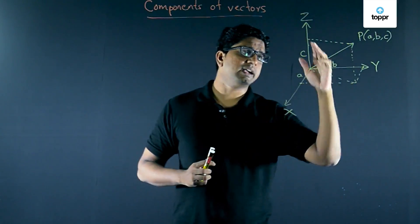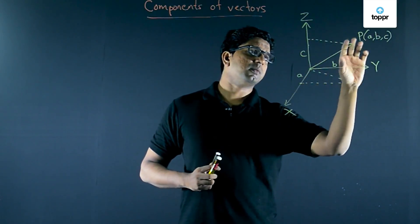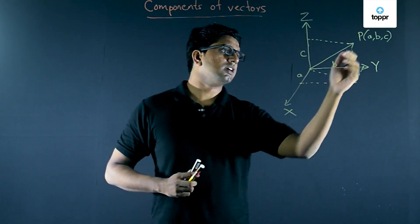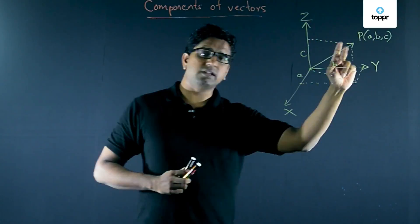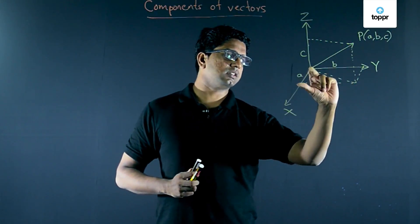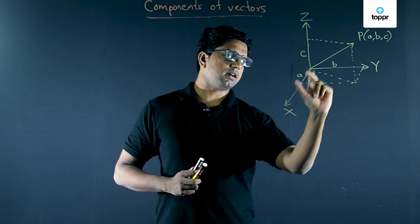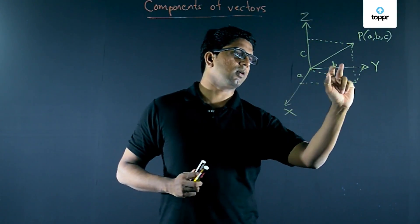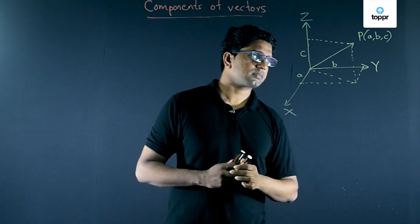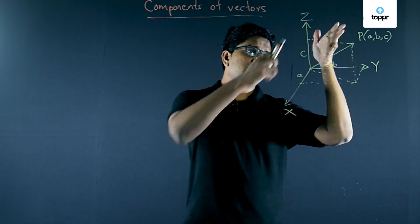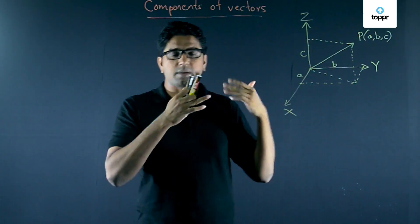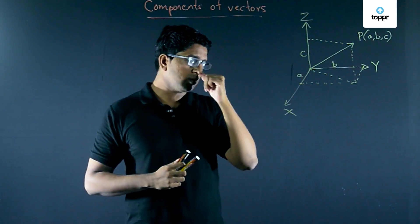Suppose you have a point P with coordinates a, b, and c. From this diagram you can clearly see that the x-coordinate marked on the x-axis is a, on the y-axis it is b, and on the z-axis it is c.